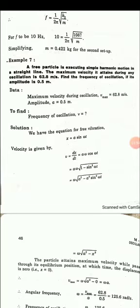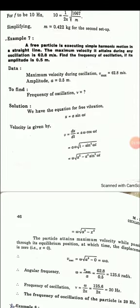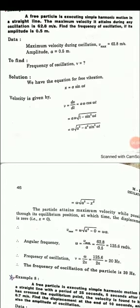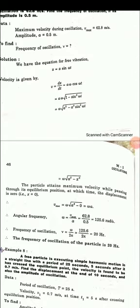This equals A omega, square root of 1 minus sin squared omega t, using the identity sin squared theta plus cos squared theta equal to 1. Substituting x equal to A sin omega t, you get v equal to omega, square root of A squared minus x squared. The particle attains maximum velocity while passing through the equilibrium position.